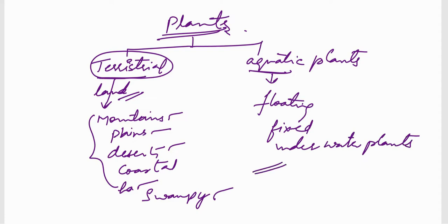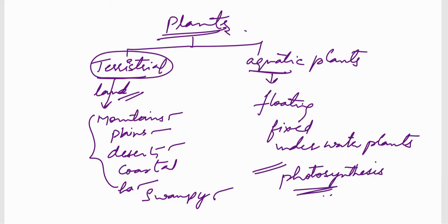Apart from this, you are also going to study about photosynthesis. This is a very important topic you are going to deal with now. Plants are broadly classified into two: one is terrestrial plants, another one is aquatic plants.